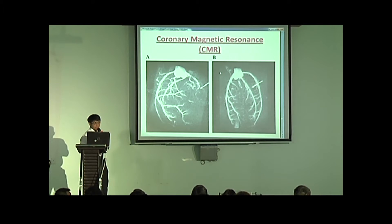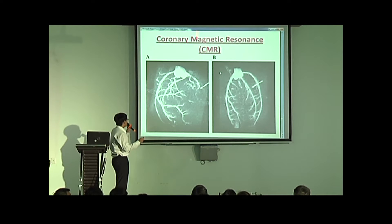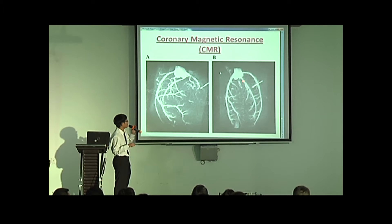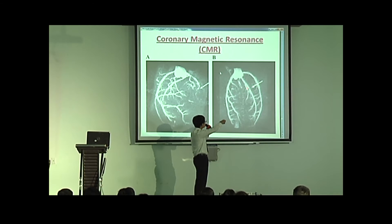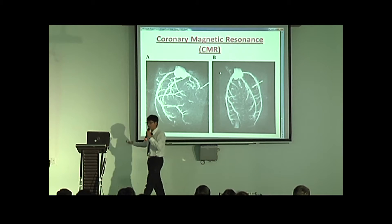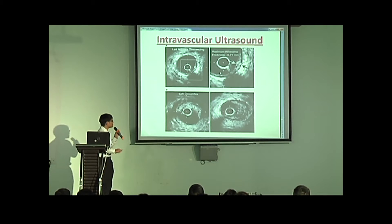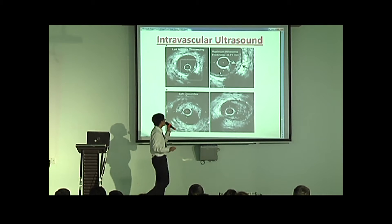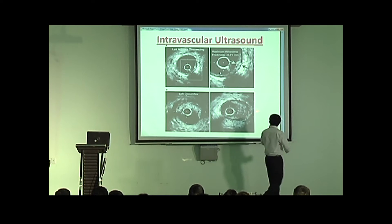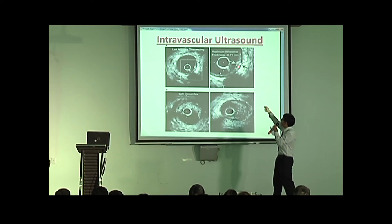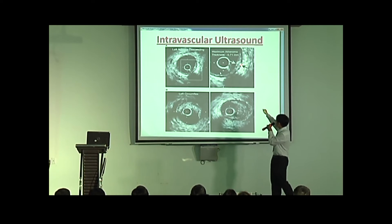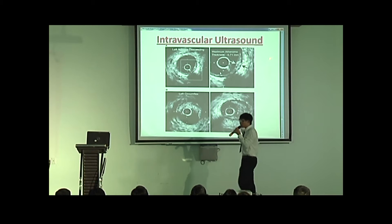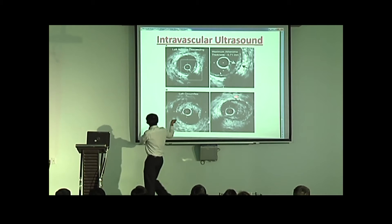The second technique is coronary magnetic resonance imaging. This technique can show the wall of a vessel. The third and last technique is intravascular ultrasound. This technique is very interesting because you can calculate exactly the maximum atheroma thickness — in this image it is 0.71 mm. This gives a better assessment in the diagnosis.